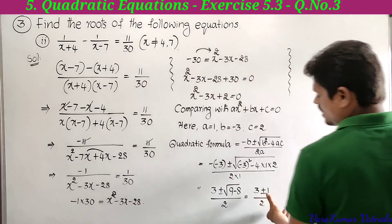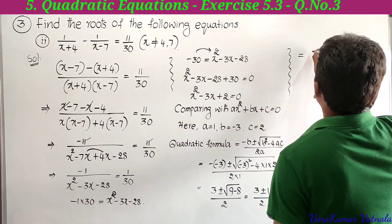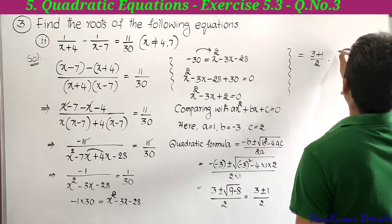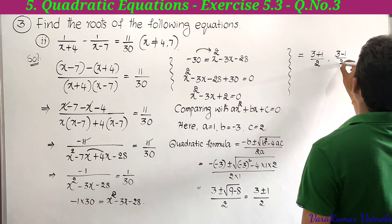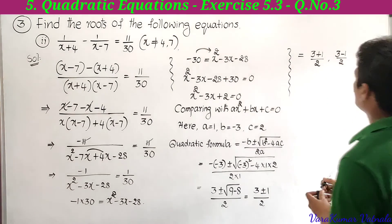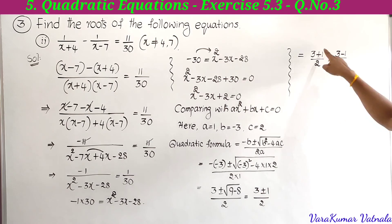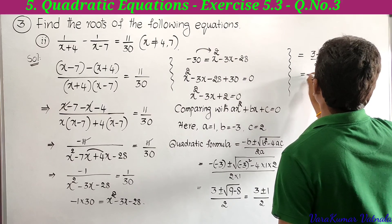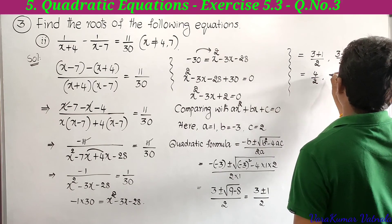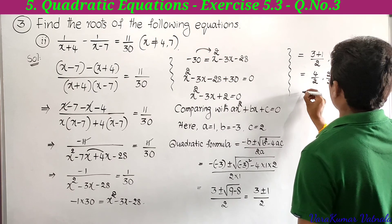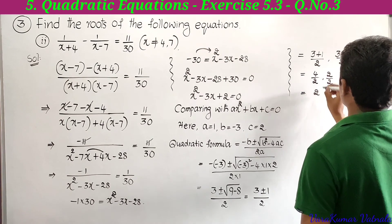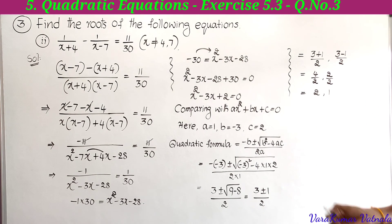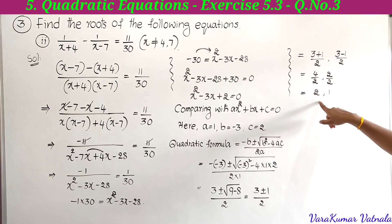Taking plus and minus, we get 3 plus 1 by 2 and 3 minus 1 by 2, which are 4 by 2 and 2 by 2. Simplifying, we get 2 and 1. Therefore the roots of the given equation are 1 and 2.